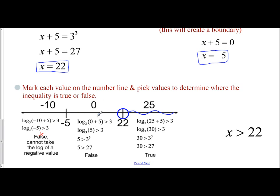I plugged in 0. Log base 3 of 5 is greater than 3. So is 5 greater than 3 to the 3rd, which is false because 5 is not greater than 27. If I plug in 25, is 30 greater than 3 cubed? Is 30 greater than 27? Yes.